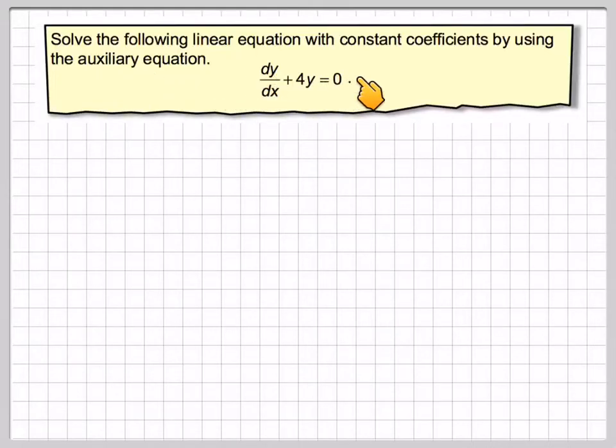Solve the following linear equation with constant coefficients by using the method, what's known as the auxiliary equation. So dy by dx plus 4y is equal to 0.